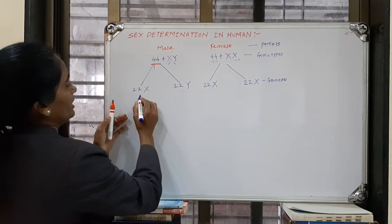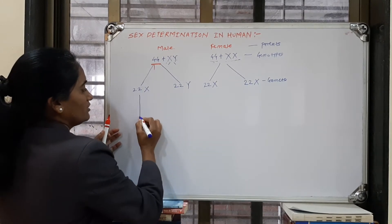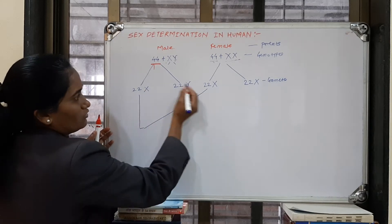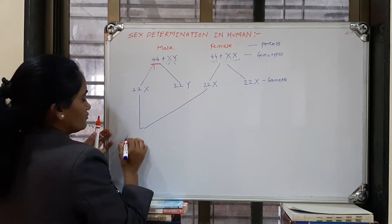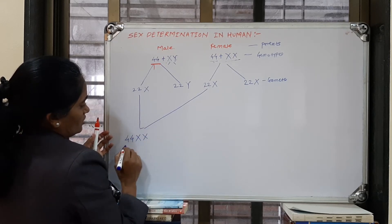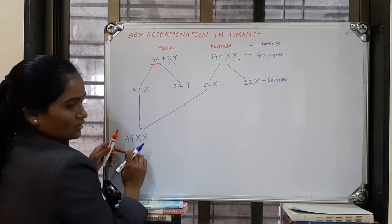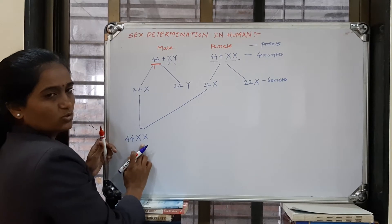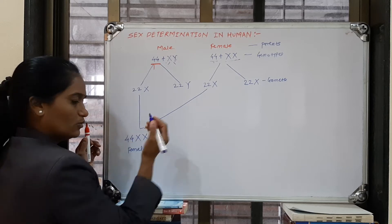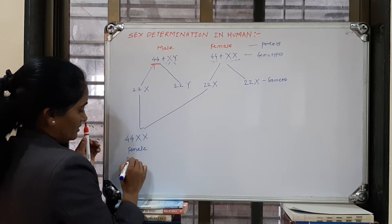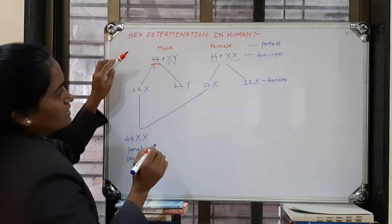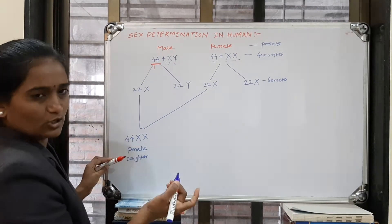Taking the first fertilization: 22 plus 22 becomes 44 autosomes, and X from male plus X from female. This genotype shows double X, meaning the offspring is female. The progeny is a daughter.